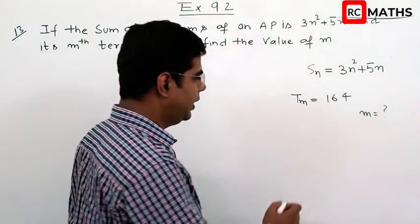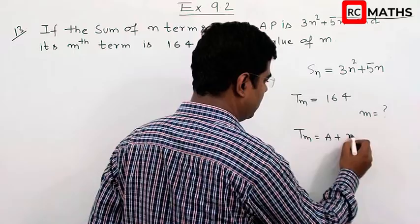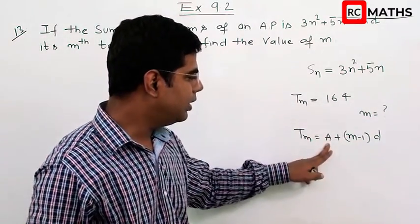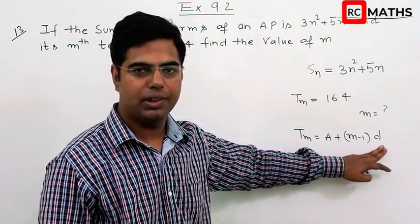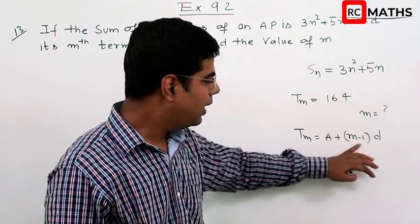So Tm is a plus m minus 1 into d. The requirement is that if we know a and d, where a is the first term and d is the common difference, we can find m.